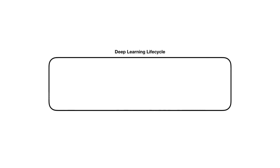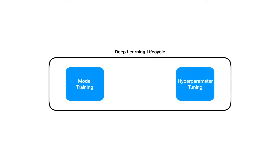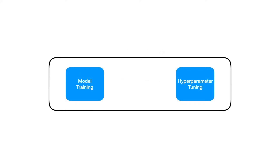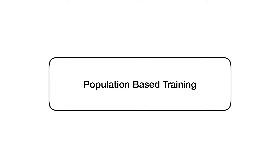A typical deep learning life cycle treats model training and hyperparameter tuning as separate procedures, which could be lengthy and computationally expensive. Our team focuses on a new type of model training approach which unifies the two procedures into one. It is called population-based training, or PBT. This PBT approach can discover a dynamic schedule of the hyperparameters and train the neural networks at the same time.